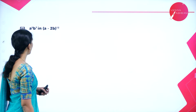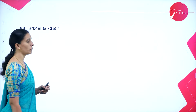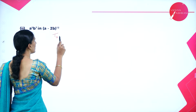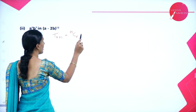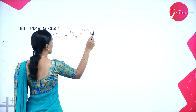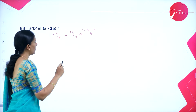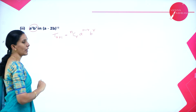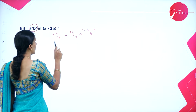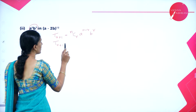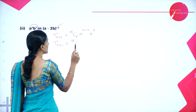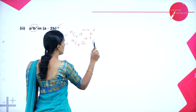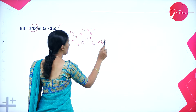Next question: find the coefficient of a^5 · b^7 in (a - 2b)^12. Write the general term: T(r+1) = 12Cr · a^(12-r) · (-2b)^r. We need to find a^5 · b^7. Comparing with b^7, we can directly write r = 7. Or equating 12 - r = 5 from the a^5 term, we again get r = 7.